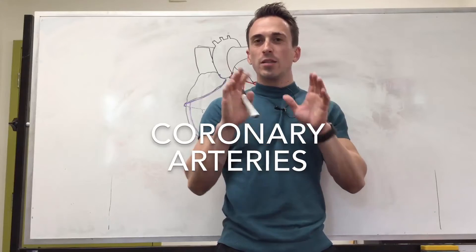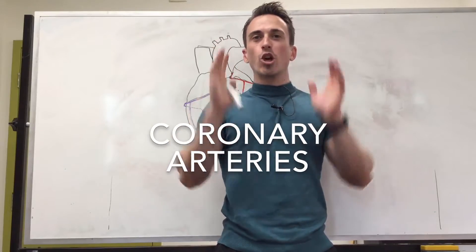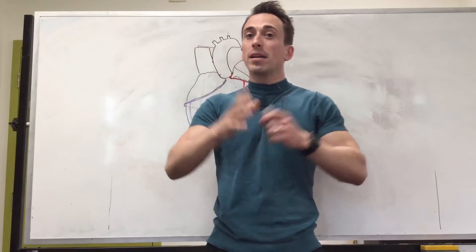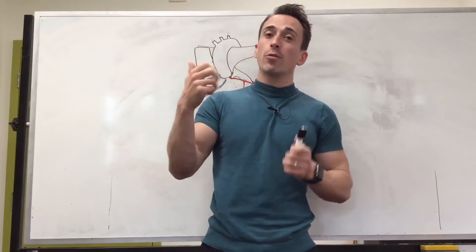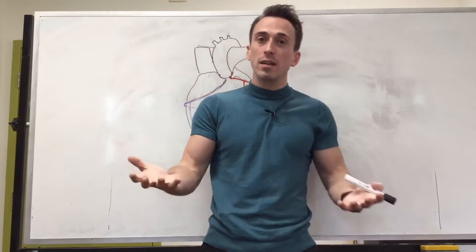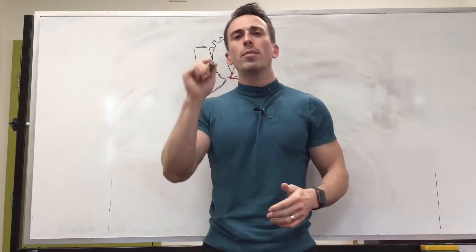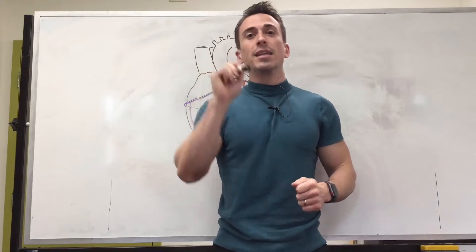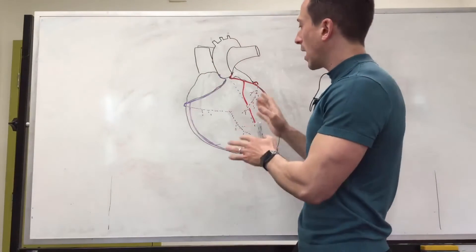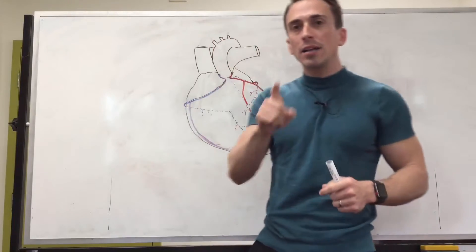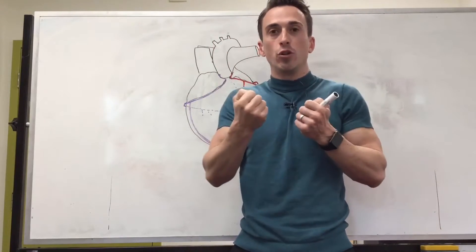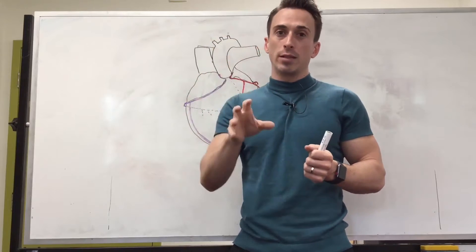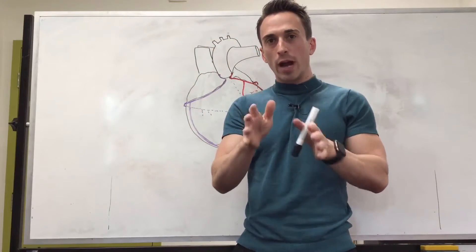Hi everyone, Dr. Mike here. In this video we're going to look at the coronary arteries. Remember the heart is a muscle — it contracts and pumps blood around the body and the lungs to feed it, give it oxygen and nutrients. But the heart itself also needs oxygen and nutrients, and it gets them via the coronary arteries. That means the heart needs its own dedicated blood supply. Again, these are the coronary arteries.